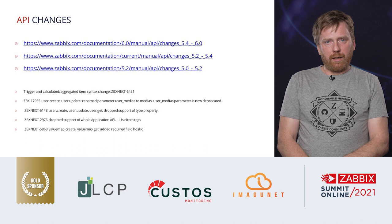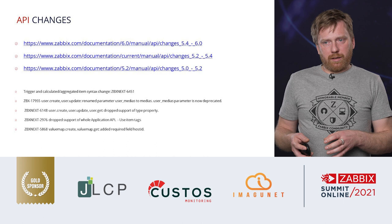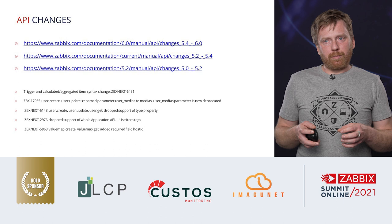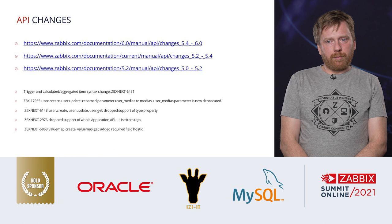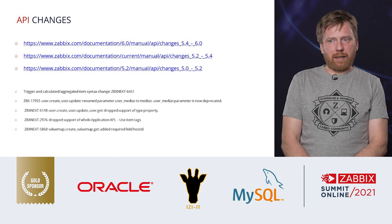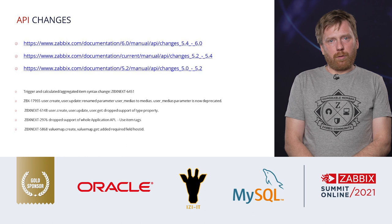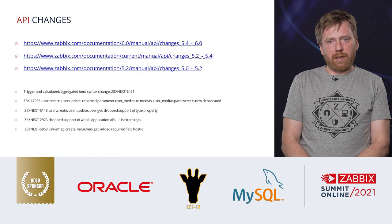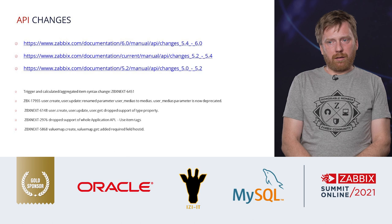Trigger and calculated aggregated item syntax changes have been covered in other sessions. When you do the upgrade, the actual syntax will be upgraded automatically by Zabbix, but if you have API integrations that create such items or triggers manually, you will also need to upgrade the syntax there. The user.get API parameter no longer supports usermedias — they are renamed to medias.usermedias. There is also no longer a type option for the user object in the API because Zabbix now uses user roles. Additionally, applications have been renamed to item tags.